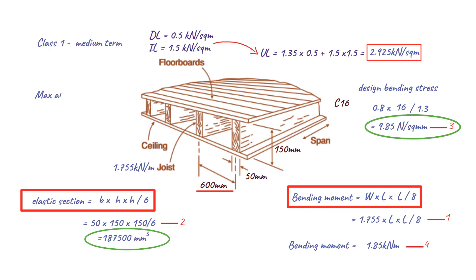Finally, to determine the maximum allowable simply supported span for our timber floor, we can equate the values of the bending moment by multiplying 1.85 by 8 and setting it equal to the product of 1.755 and the span squared. Solving this equation gives us a span of 2.9 meters as the maximum allowable simply supported span for our timber floor.